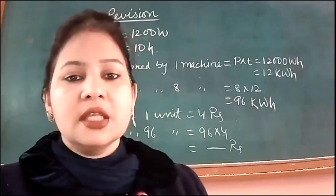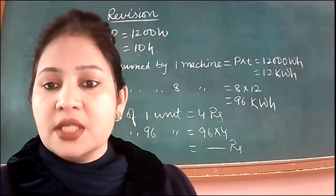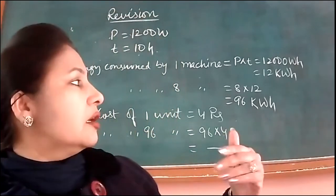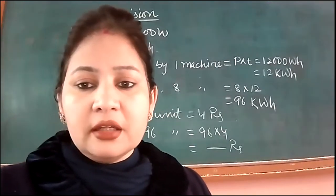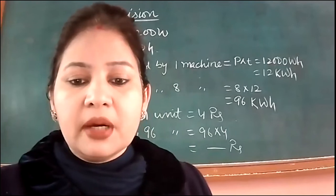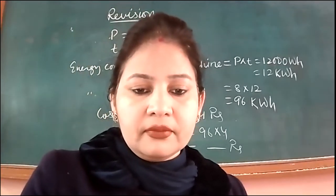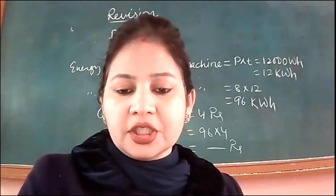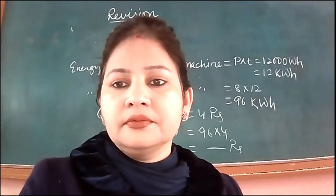So that is 384 rupees. That is the bill for running eight machines simultaneously the whole day. So it is the bill. Agar unhone ek month ka bola hota toh, you could have seen how many days are there in that particular month. You could have multiplied by the number of days. We can now show Riyanshika's video. So I am going to share the screen.